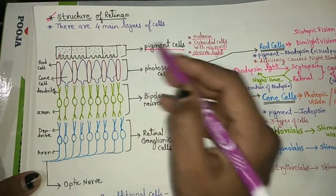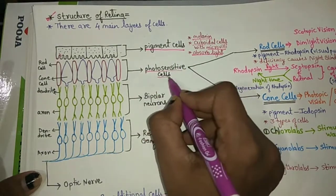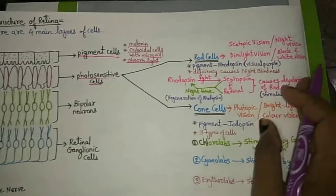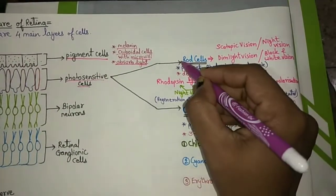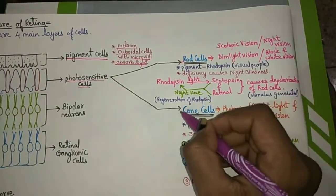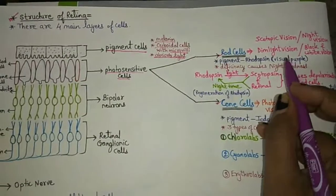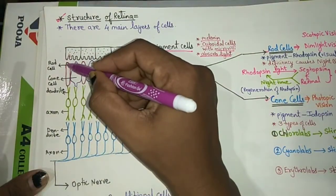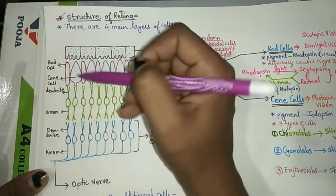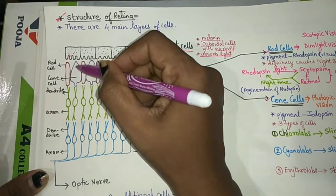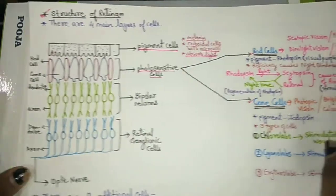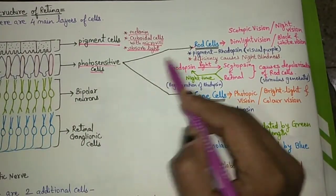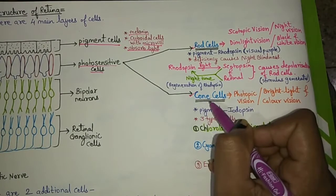The second layer is the photosensitive cells. Photosensitive cells are of two types: rod cells and cone cells. The elongated cells are rod cells, and the cone-shaped cells are cone cells.